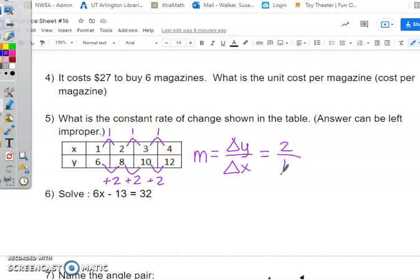So that's our constant rate of change, just like that. M is 2 over 1, or just 2.